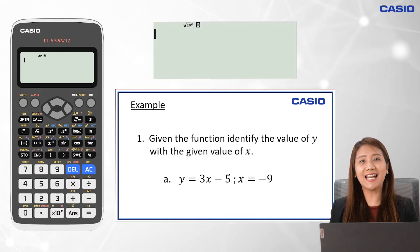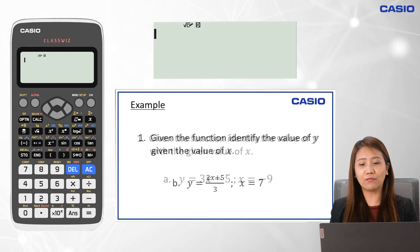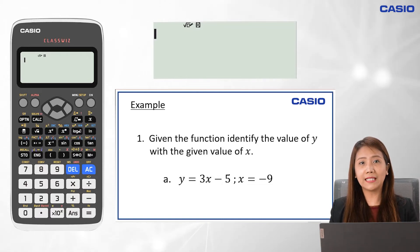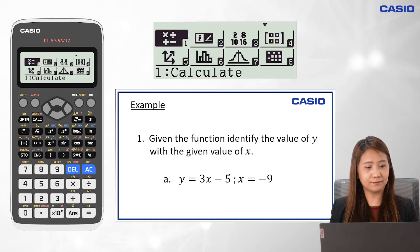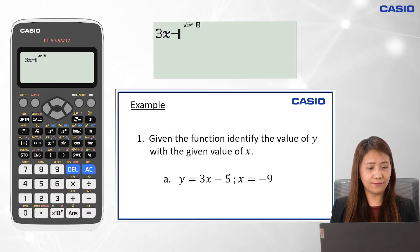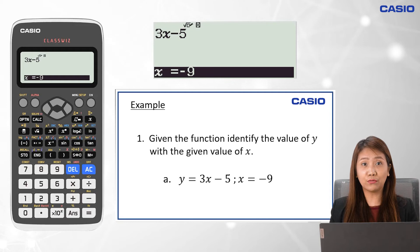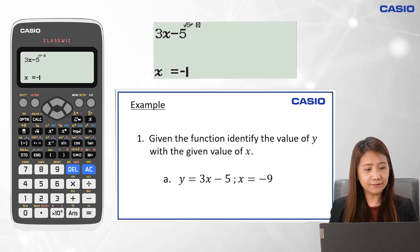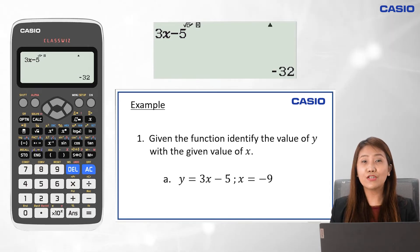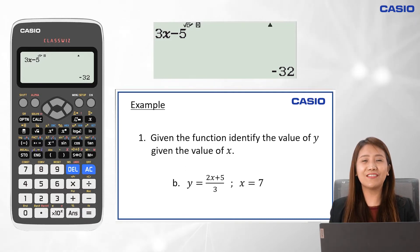Let's have an example. Given the function, identify the value of y with a given value of x. The function is y equals 3x minus 5, where x is equal to negative 9. To solve for y, we go to Menu 1, calculate mode. Input 3x minus 5, then press calc, and it will ask for the value of x. Input negative 9, press equal sign twice, so the value of y is negative 32.